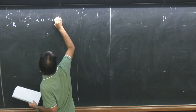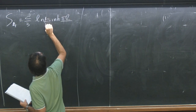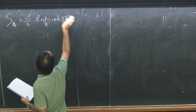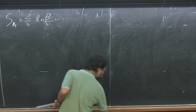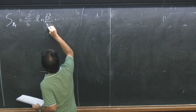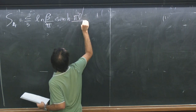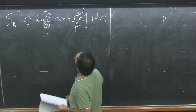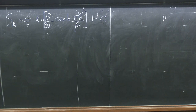Then the entanglement entropy — since this expression has exactly the same form as before but with L replaced by the hyperbolic sine function — is very simple. The entanglement entropy is S = c/3 × log(sinh(πL/β)), which is the final formula for the entropy of a CFT at finite temperature.